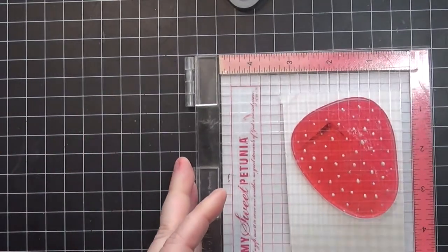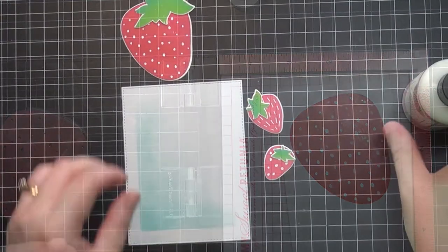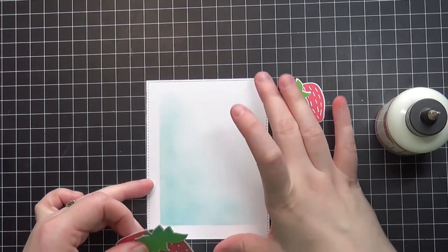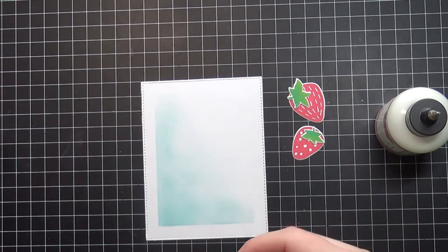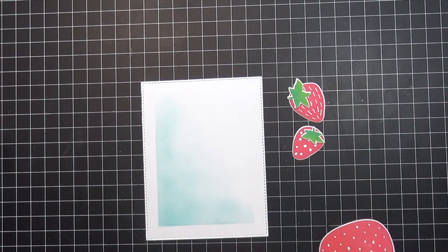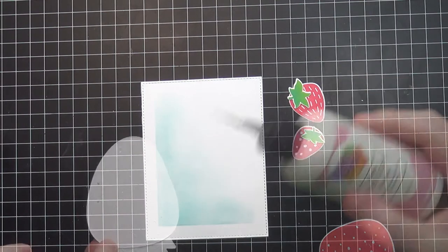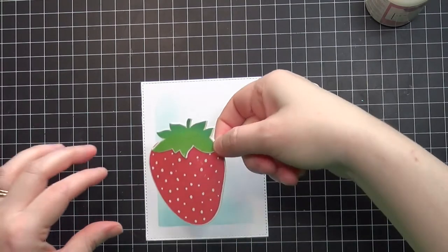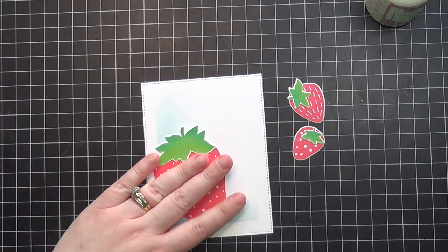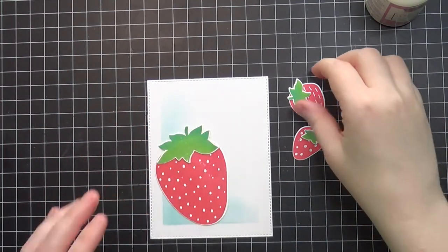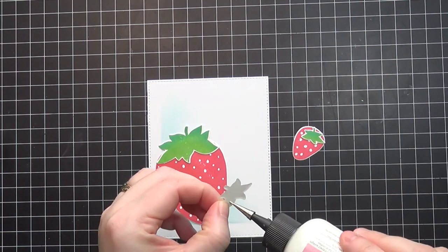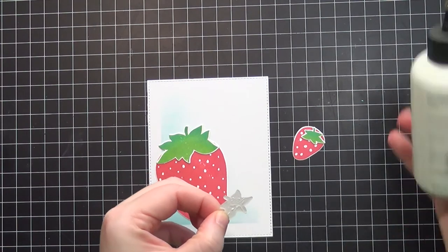Once I have that stamped onto my cardstock, I went ahead off camera and stamped the rest of the strawberries and the tops. I did the gradient thing on the tops with two different greens, and you can really tell that gradient. Now I'm placing my strawberries onto my panel. I love this biggest strawberry - it's so fun. There is a sentiment that stamps inside the strawberry, but I didn't do that today.